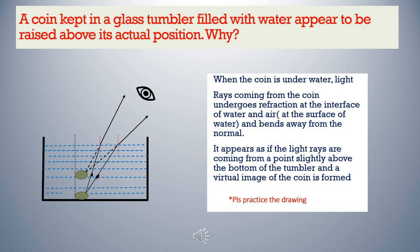These are some commonly asked questions on refraction. Question 1: A coin kept in a glass tumbler filled with water appears to be raised above its actual position. Why? Answer: When the coin is kept under water, the rays of light coming from the coin undergo refraction on reaching the surface of water — the interface of water and air — and bend away from the normal, since light is coming from a denser medium to a rarer medium. It appears as if the light rays are coming from a point slightly above the bottom of the tumbler, and a virtual image of the coin is formed. So we see the virtual image, not the real coin — that is why it appears raised from its normal position.